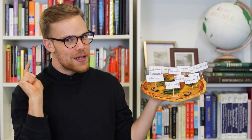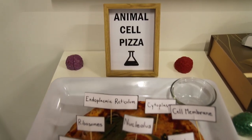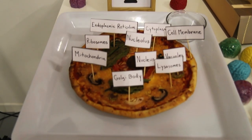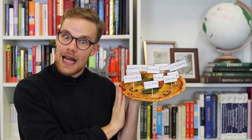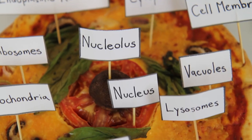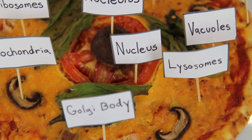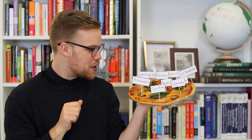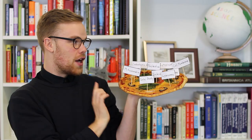Animal cell pizza! No party is complete without pizza, and this is an easy way for you to fill up your guests while also teaching them the very important part of labeling the animal cell. Your nucleus is the tomato, your endoplasmic reticulum is all this little spinach here — it's all folded over. You have all the different parts of your cell.